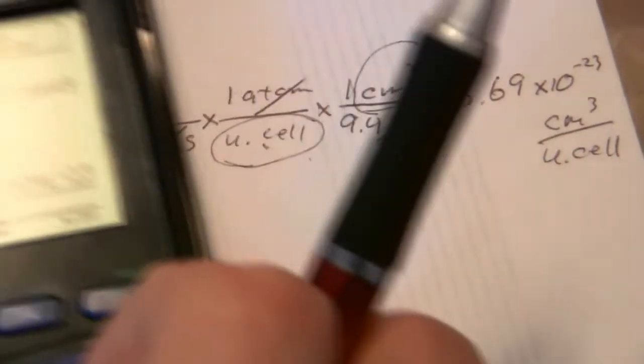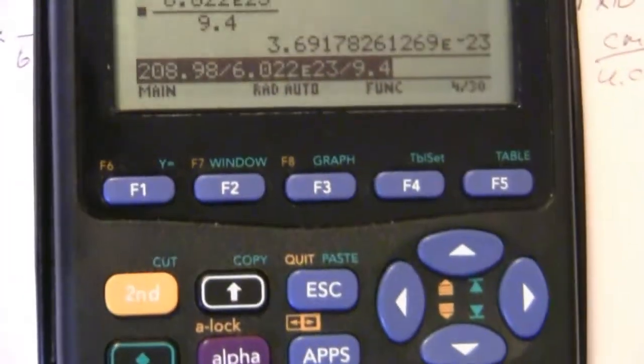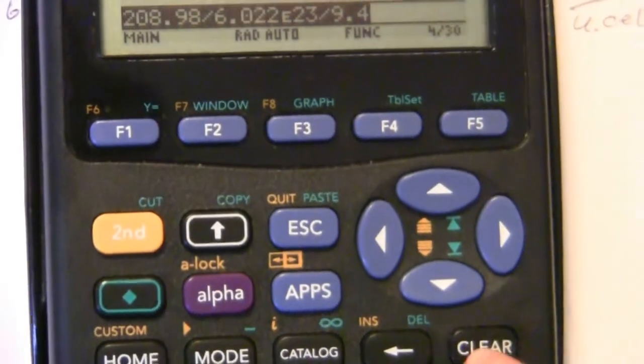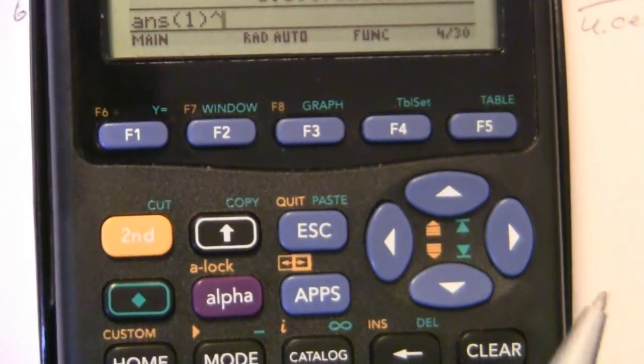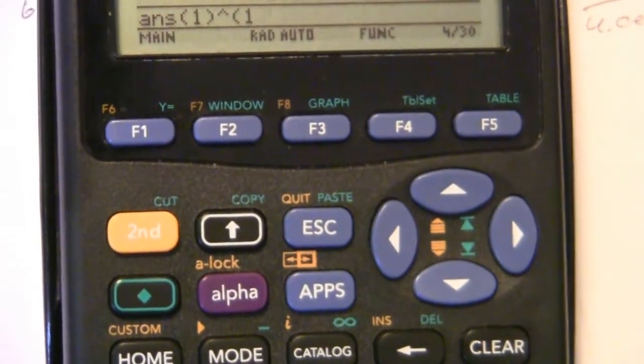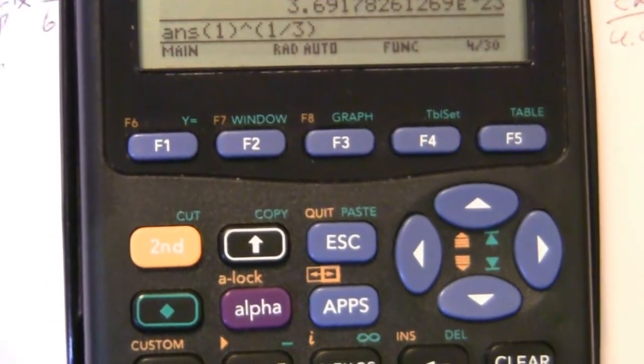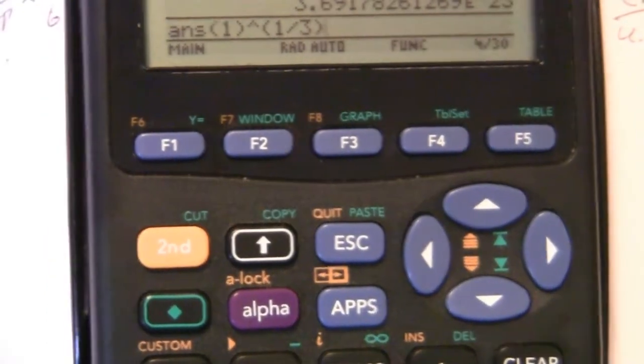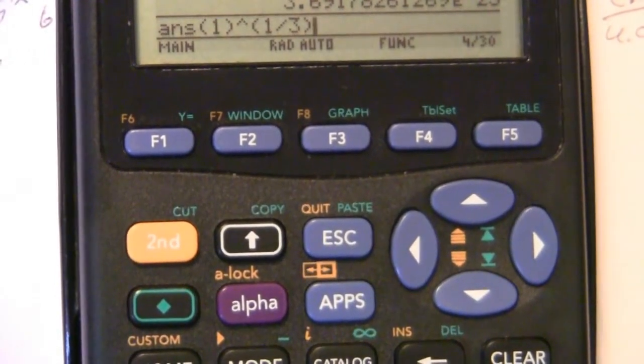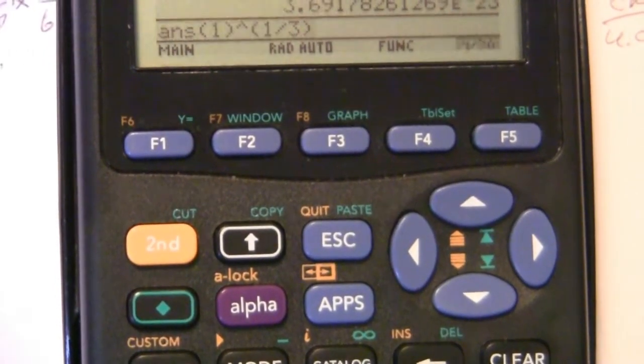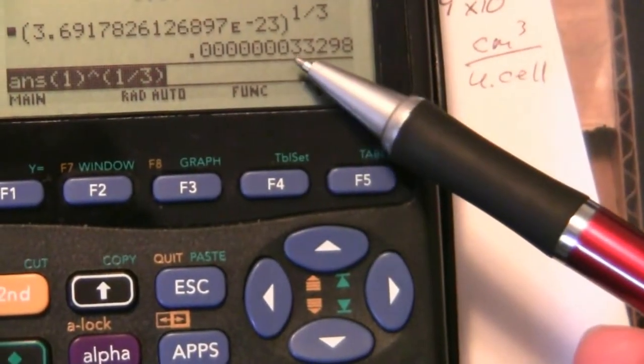So one way you can do that, if you don't have a cube root button on your calculator, you can simply raise it to the power of 1/3. You'll remember from algebra that when you raise something to a fractional power, that's the same as taking the root of that value. And so if you raise it to the 1/3, you get this small number here,